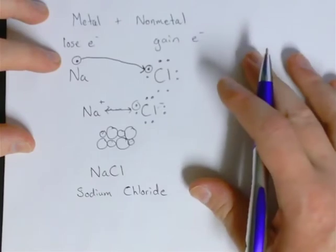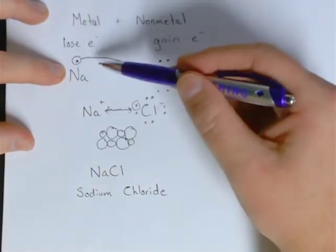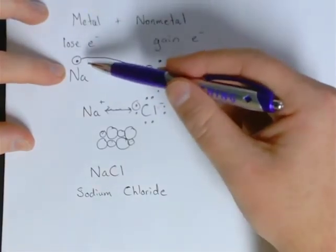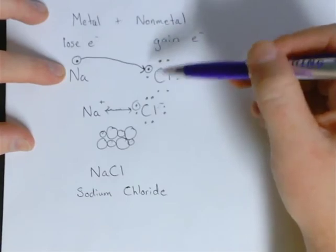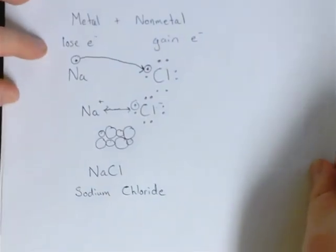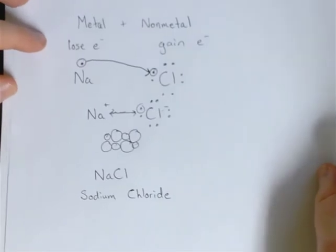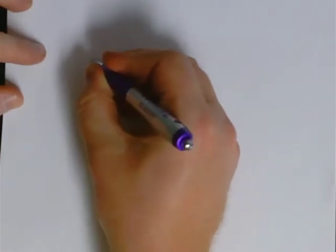What if it's not a nice, neat, even ratio, though? This worked out nicely because sodium has one electron to lose and chlorine has one electron to gain. What if it was a different element with a different number of valence electrons? A good example might be calcium chloride instead of sodium chloride.